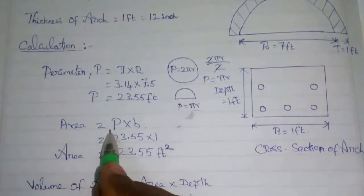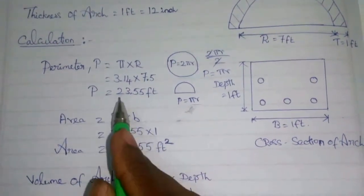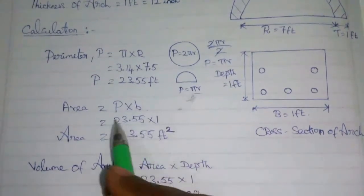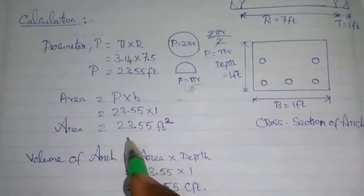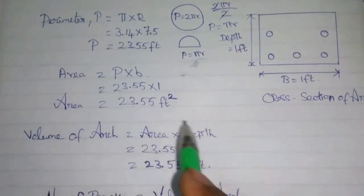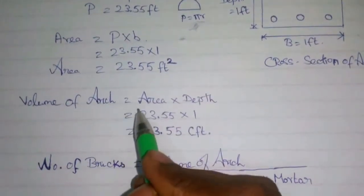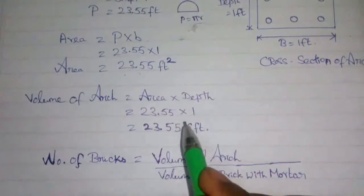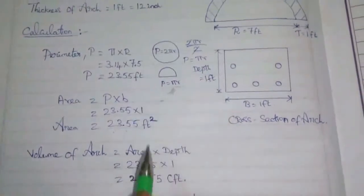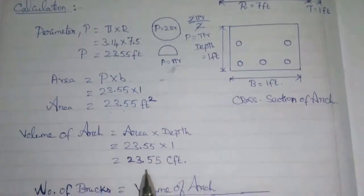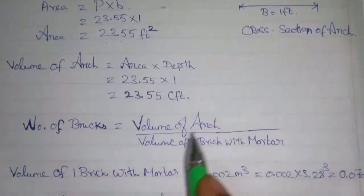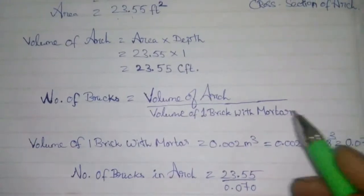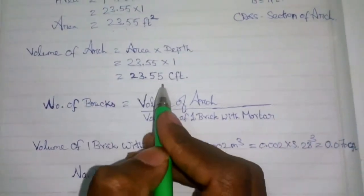Now let's calculate the area. The perimeter of the arch is 23.55 feet and the width is 1 foot. Multiplying these, the area of the arch is 23.55 square feet.